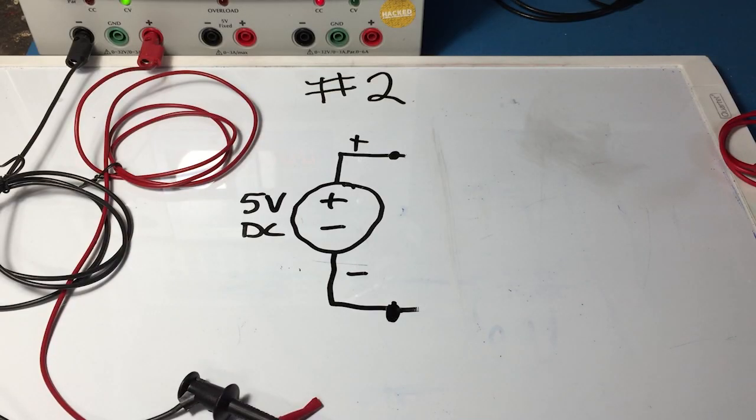For question number two we're going to add another resistor in. So we took out the original resistor and now we're going to put two resistors in the circuit.